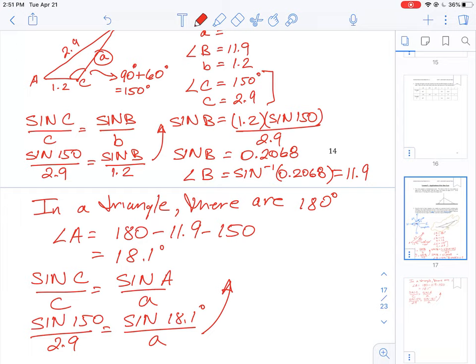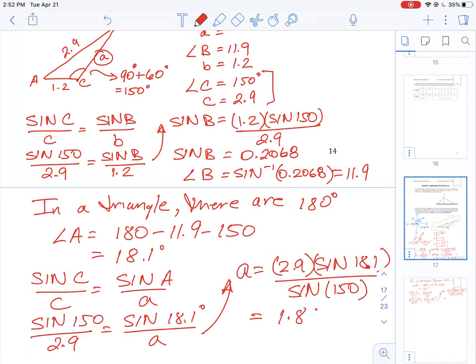So we're going to use the same calculation again, except this time we are not looking for an angle, we're looking for a side. So A is equal to, cross multiply, 2.9 times sine 18.1 all over sine 150. All right, and then this, when we work it through, and remember, just make sure your calculator is in degree mode when you're using your trig functions, you'll see A is equal to 1.8 kilometers, or 1.8.